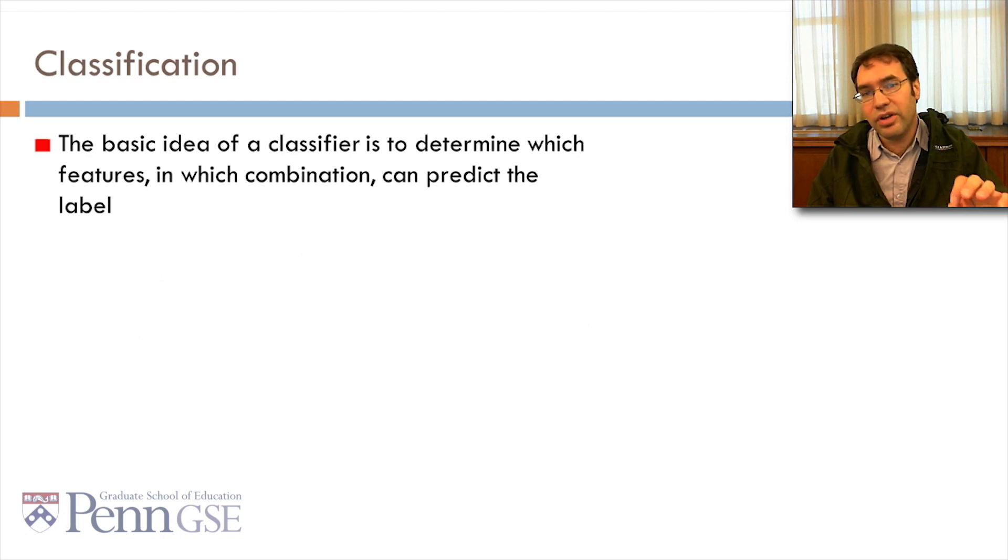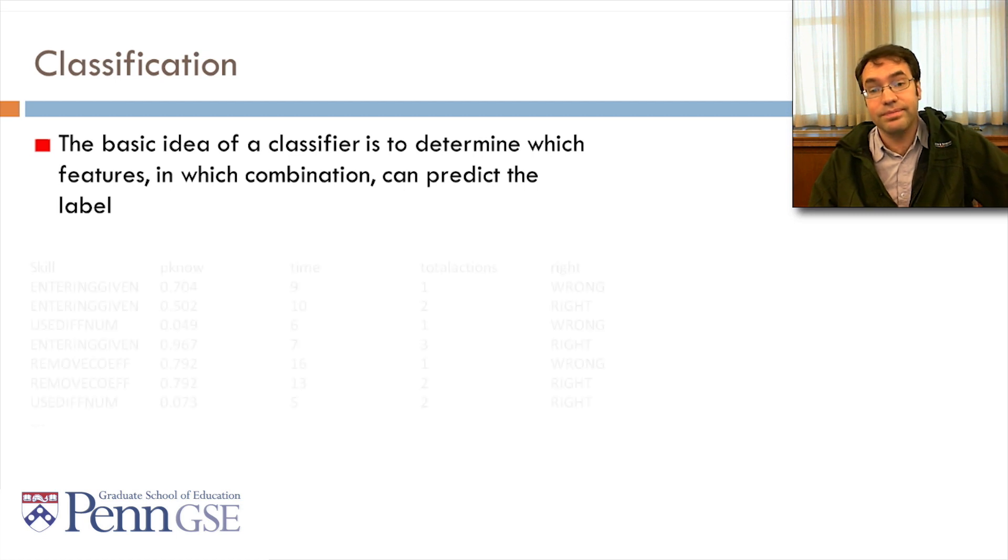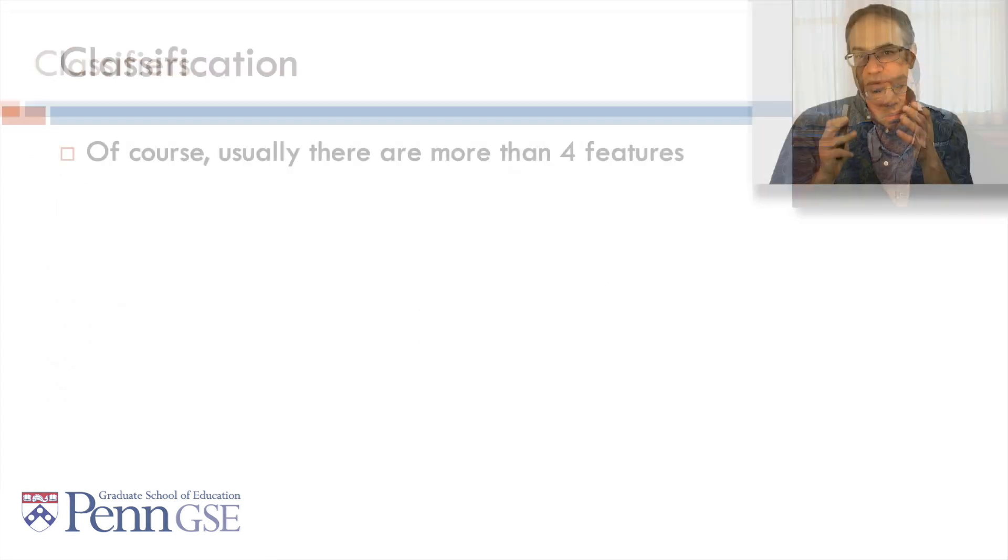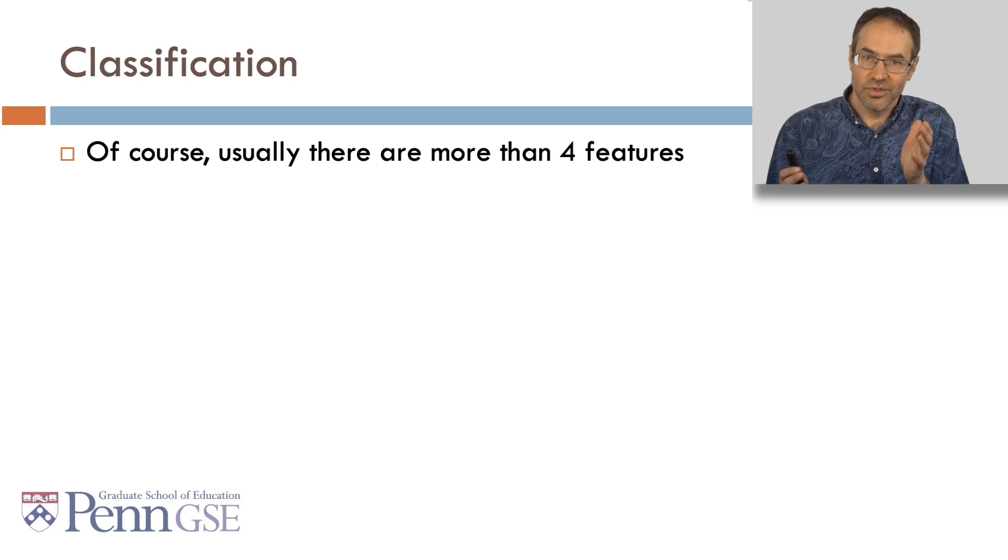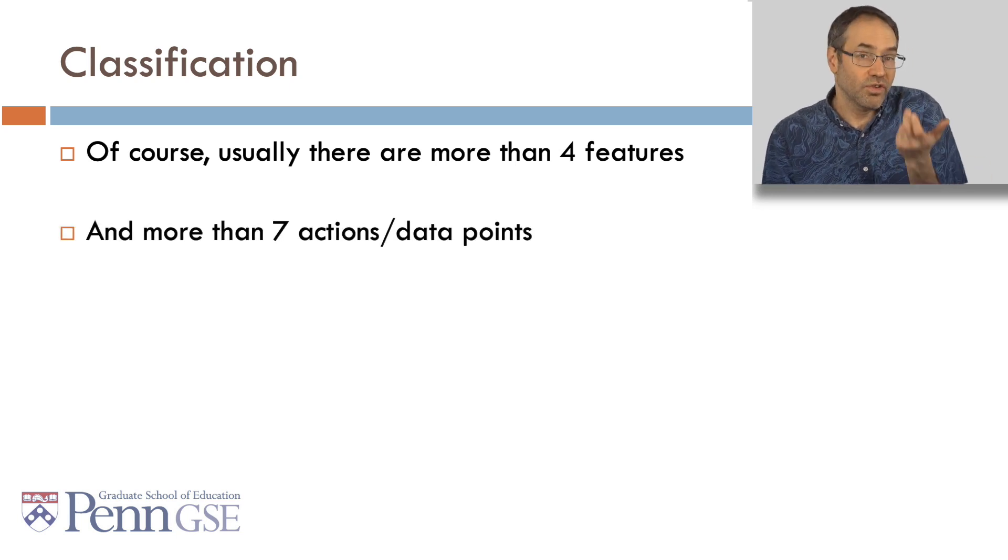The basic idea of a classifier is to determine which features, in which combination, can predict the categorical label. Of course, usually there are more than four features, and more than seven actions or data points.